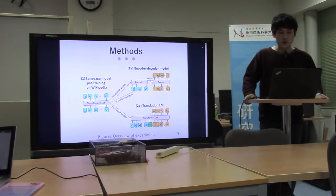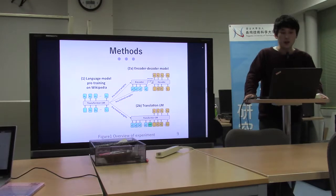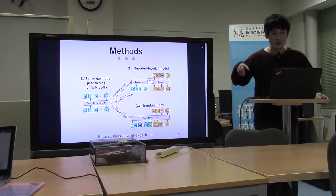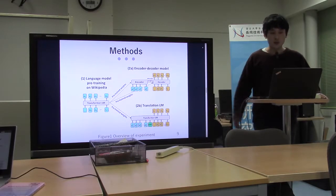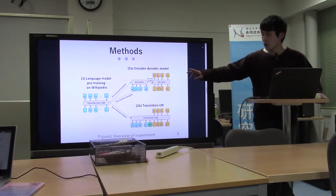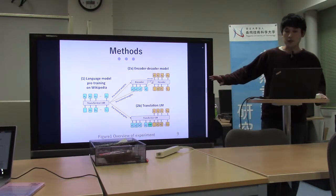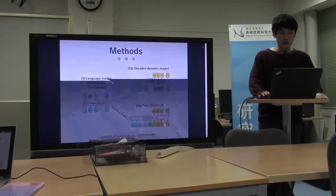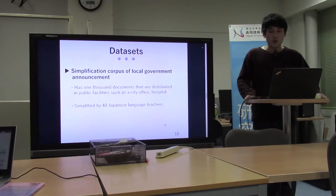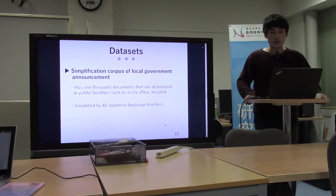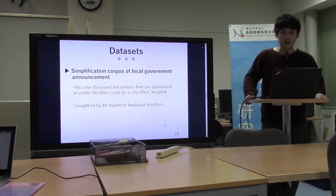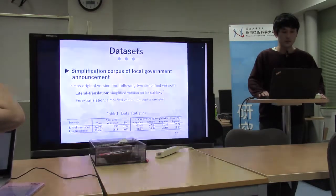I will again show the overview of the experiment. First, we train the language model on a large monolingual corpus. After that, we compare two ways of incorporating the pre-trained weights. We use the simplification corpus of local government announcements. It has 1,000 documents that are distributed in public facilities such as city offices, hospitals, and schools, and these are simplified by 40 Japanese language teachers.